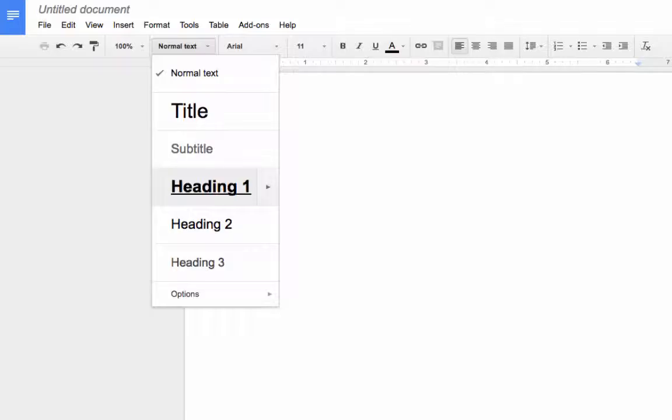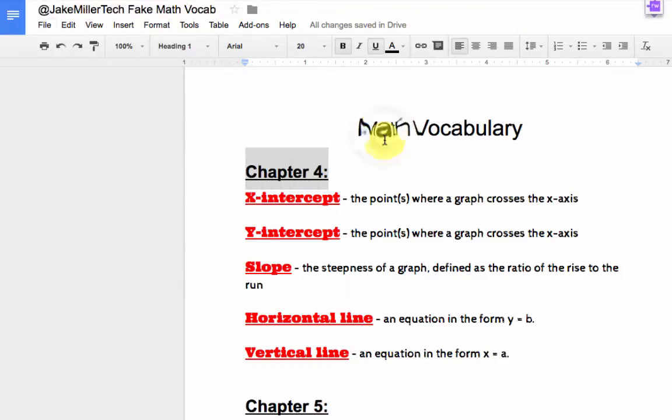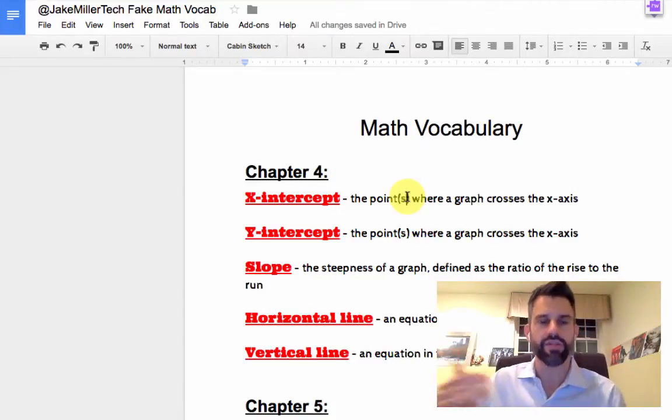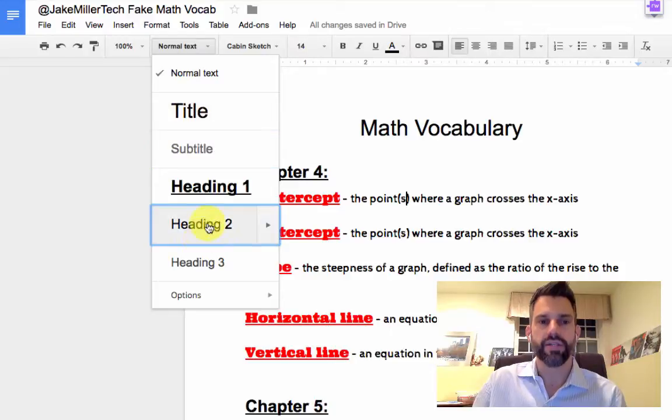So now I can also change my title and things like that. If I'd like my title to always be centered, I could change that. One way I immediately use this when using a new Google account for the very first time is to make my text larger because it defaults to Arial size 11, so I default it to Arial size 14. And you can also change what the default spacing is. So now your texts will be the way you like them to be, and now you can start using these tools as you go through your document.